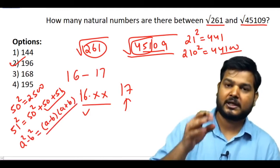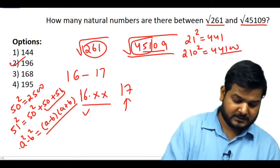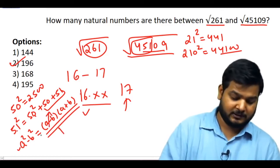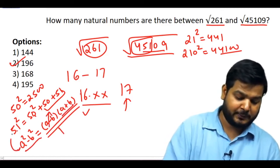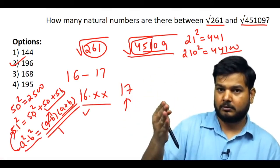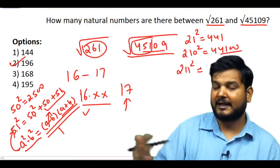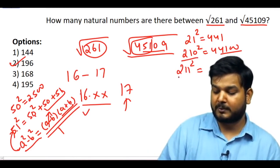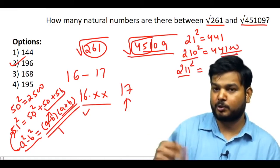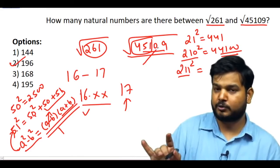This is just another way of writing that identity — nothing new, nothing magical. But we don't practice it. For consecutive numbers, (a − b) = 1, so the next number's square = previous square + sum of both numbers. If I know 210², then 211² = 210² + 210 + 211 = 44100 + 421 = 44521.